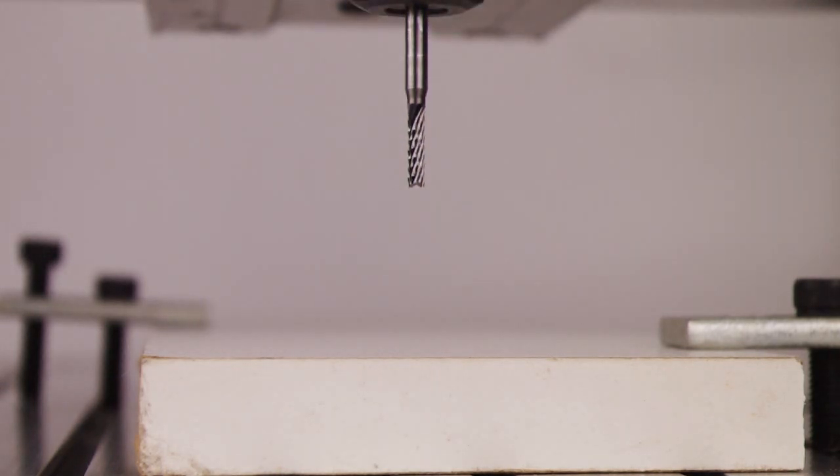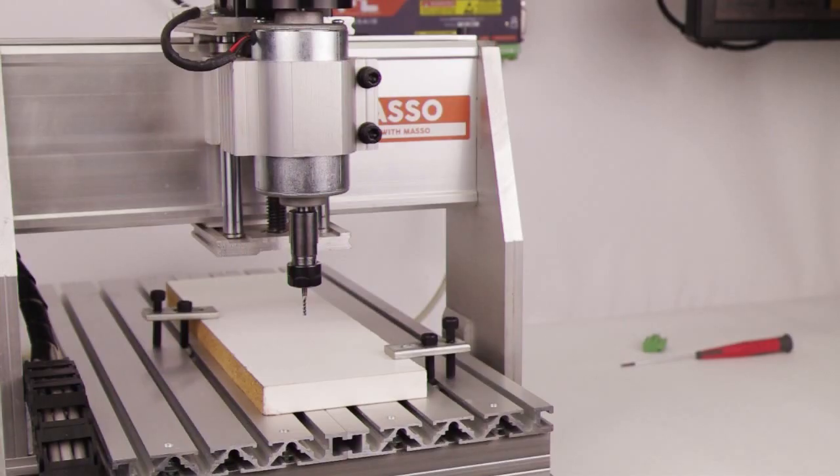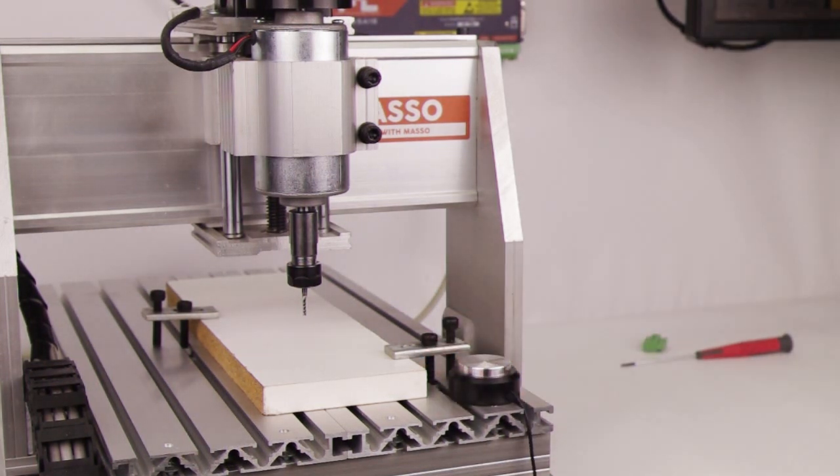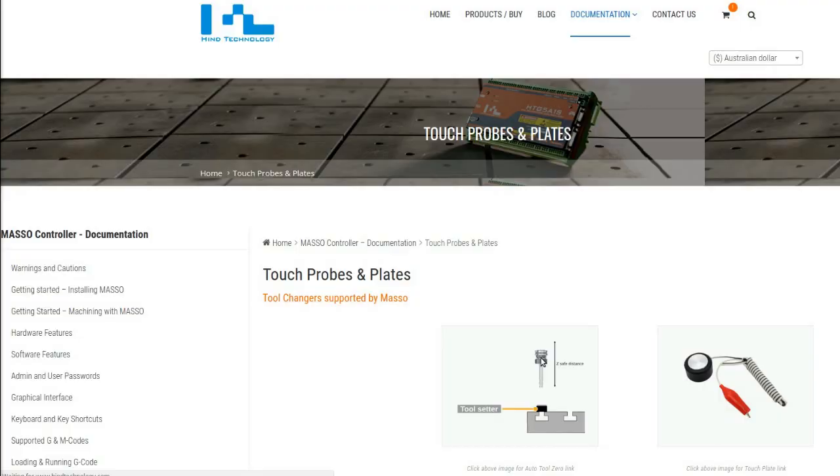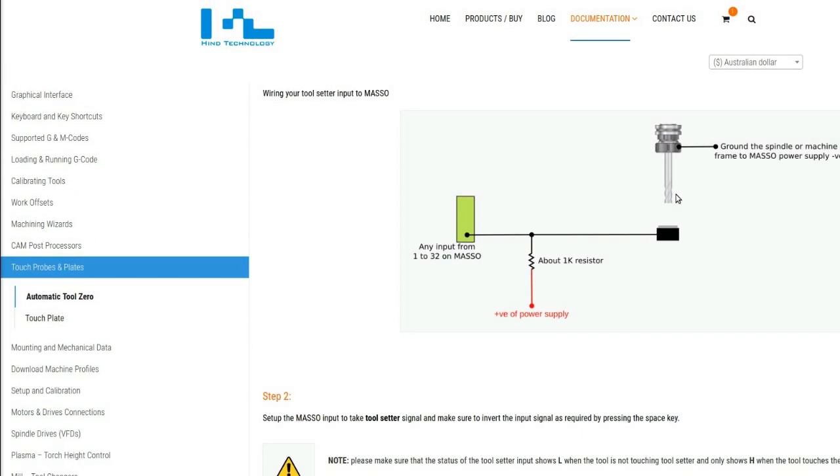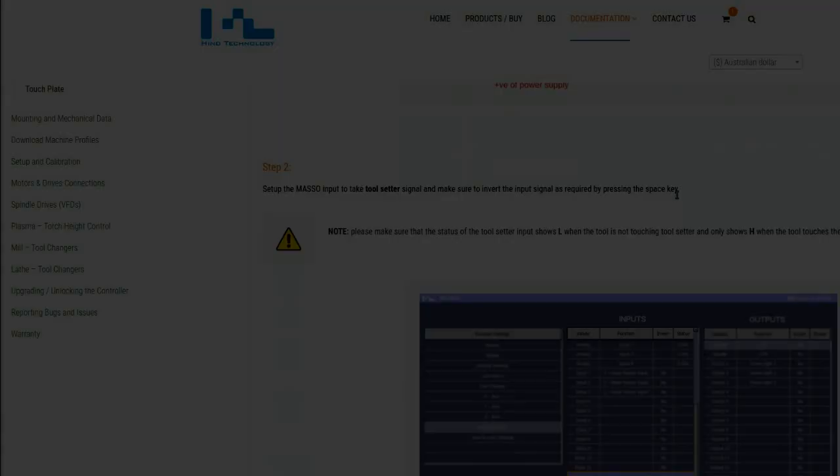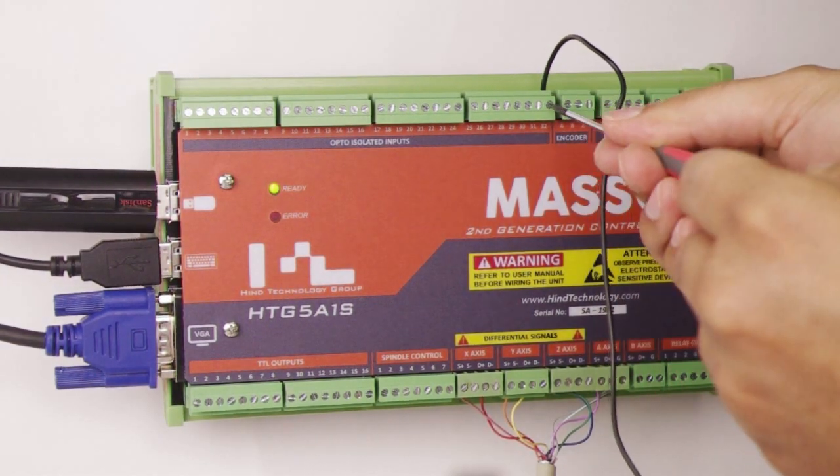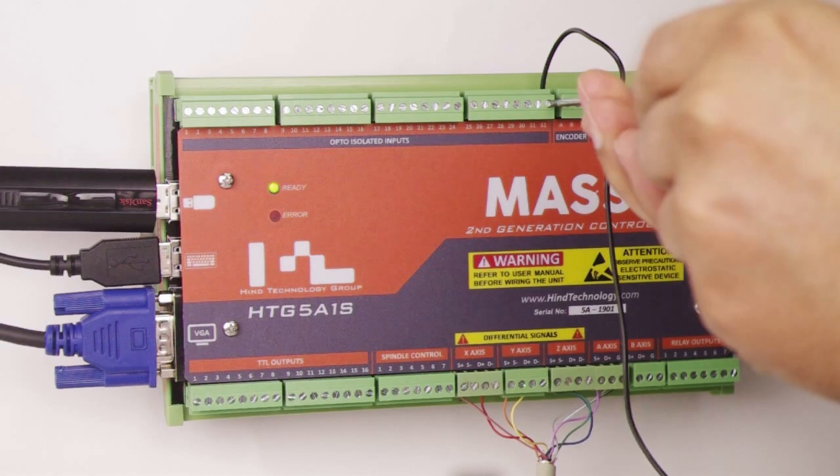With the MASSO automatic tool zero option, you can automatically calculate the height of the tool. Simply start by positioning a touch plate on the machine bed at a fixed position and wire it up to the MASSO as per the documentation on our website. Wire the connection to any of the 32 inputs we have.